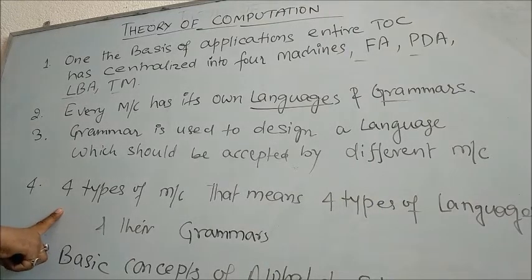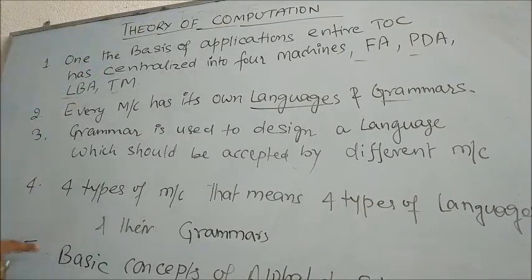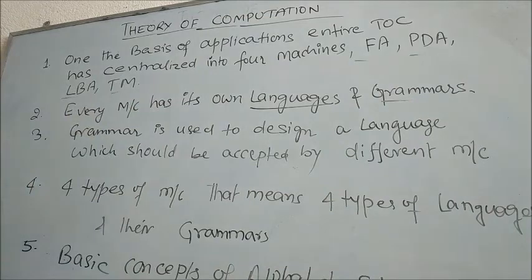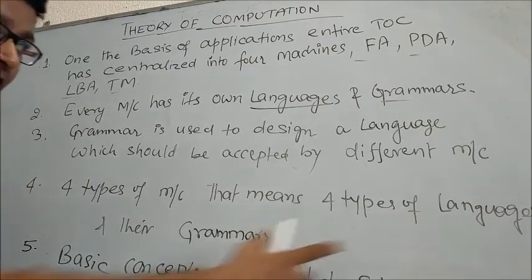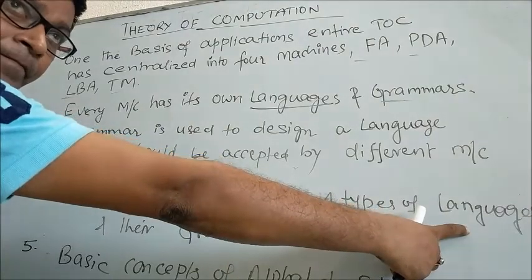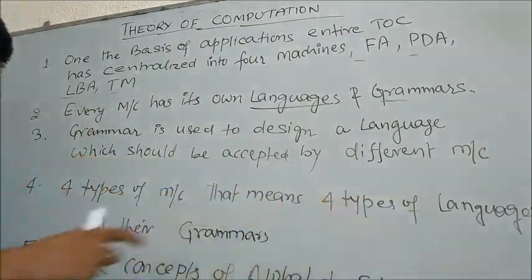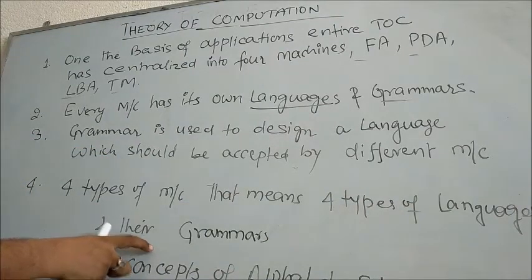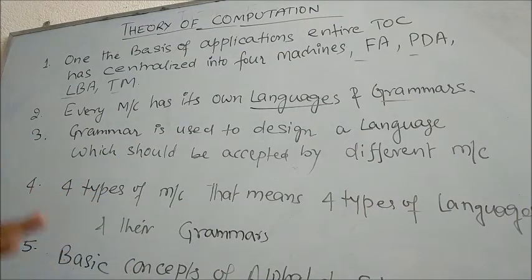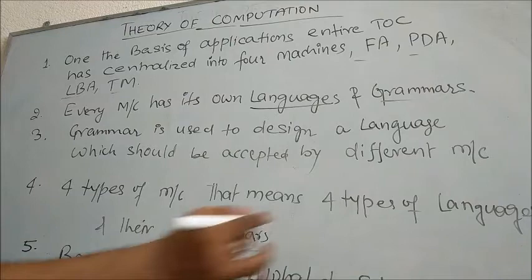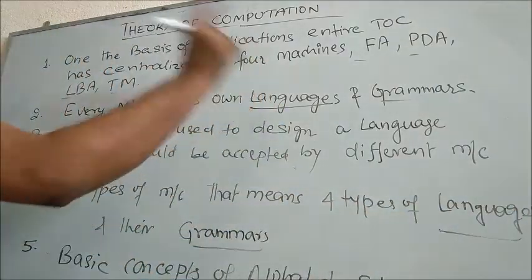In Theory of Computation we have to study about four types of machines. For these four types of machines we will have four types of languages. And to design these four types of languages we should have four types of grammars. So, mainly what we have to study in Theory of Computation is grammars, languages, and machines.